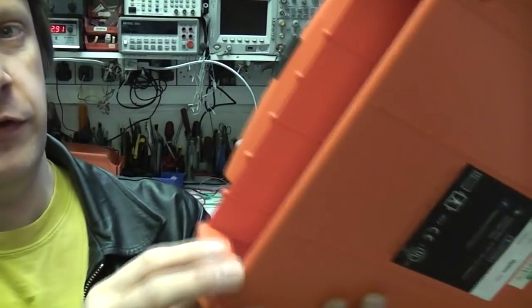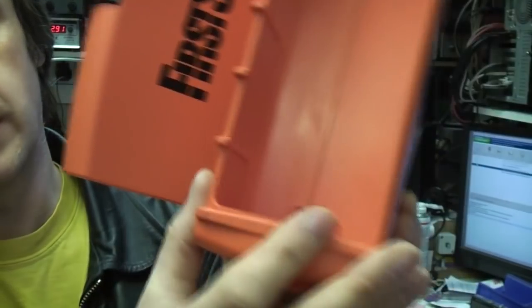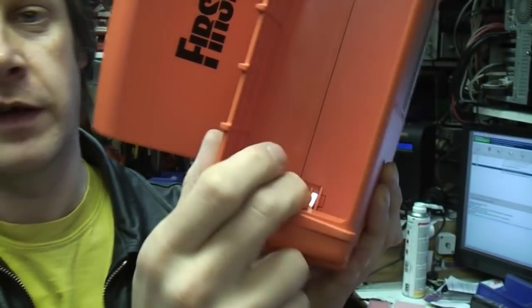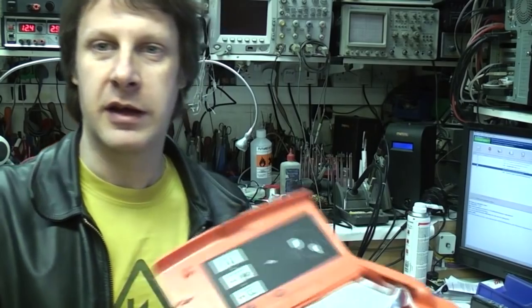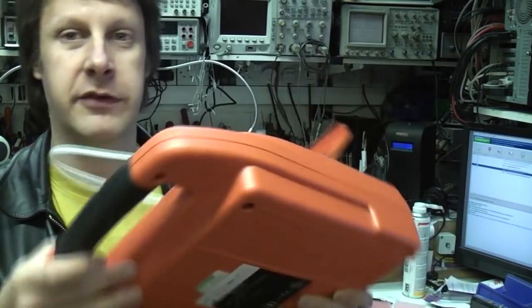The battery has actually got in this, it's an intelligent battery. You've got these four contacts here which is a data link so the battery can provide information about how many times it's been used, what its charge state is, what type of battery it is. I'm sure also just to avoid third party batteries being used because you don't really want to find you've got some dodgy Chinese battery that's not going to work on a piece of equipment like this.